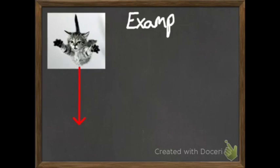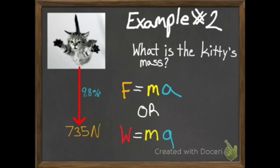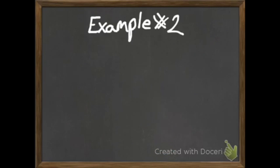Let's take a look at a momentum problem. We've got a cute little kitty falling, and the question asks us what is the kitty's mass. We know that if something is falling, and in this problem we're going to assume it's falling on Earth, it has an acceleration of 9.8 meters per second squared. We know the force exerted is 735 newtons. We can use F equals MA or W equals MG, but because this is a gravity problem, we're going to use W equals MG.